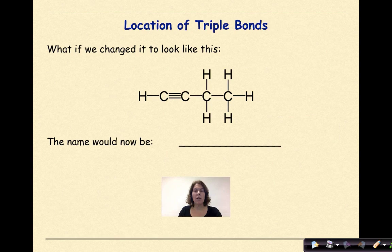What if we changed it to look like this? Now this is important about where we start numbering our carbons. So this is my left and this is my right. We know we need to start counting from the left because the triple bond is closest to the left hand side. So 1-2-3-4. Still but, still Y-N-E but now it's going to be called 1-butyne to indicate the triple bond.